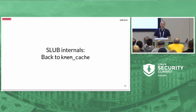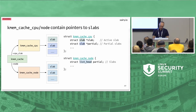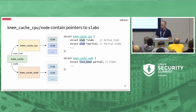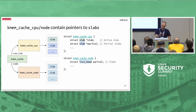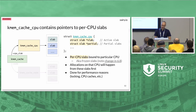Let's go back to discussing the kmem_cache structure. We discussed that we have per-CPU state with multiple slabs and per-node state with multiple slabs. Let's discuss these slabs one by one.